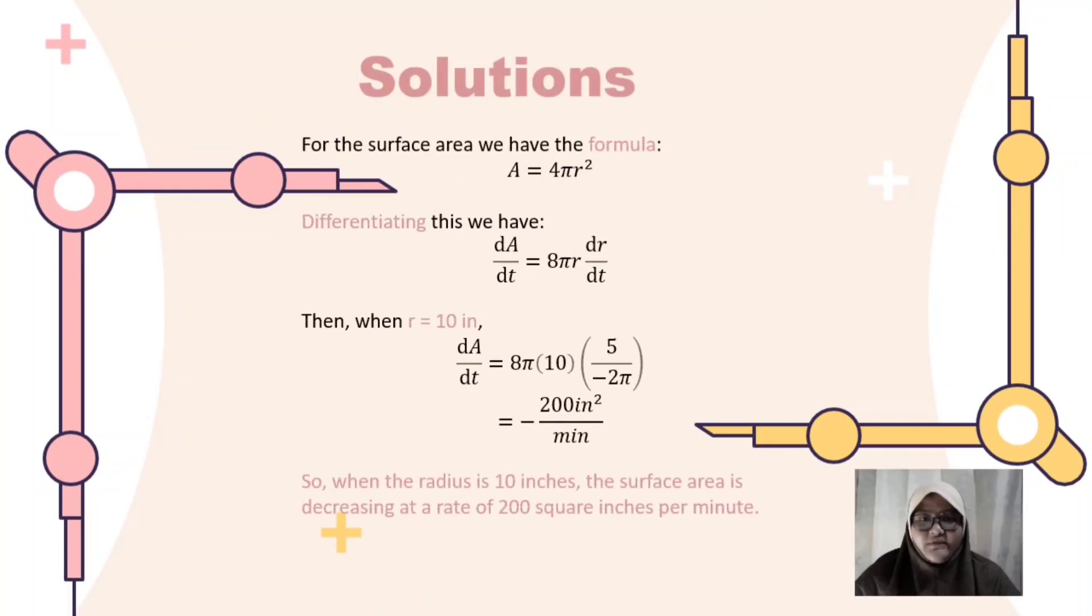So, we proceed with the solution to find surface area, which is dA/dt. For the surface area, we have the formula A = 4πr².